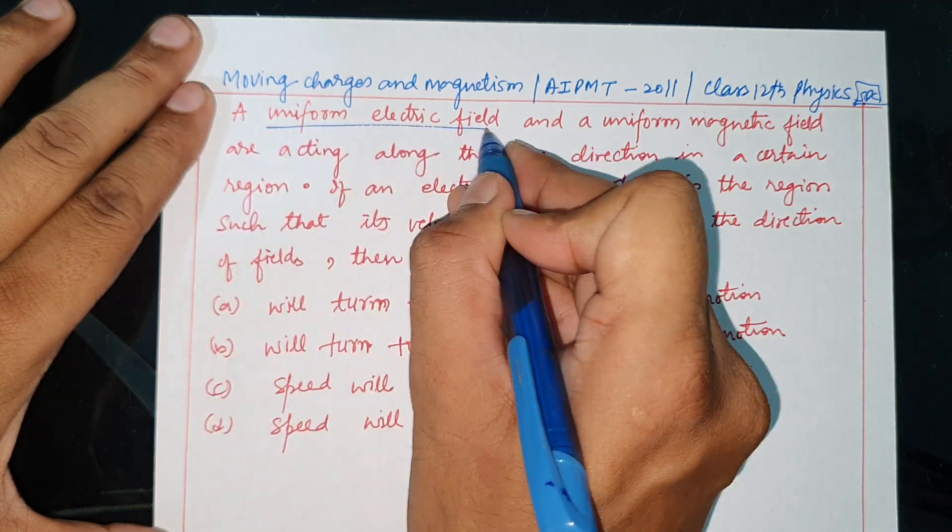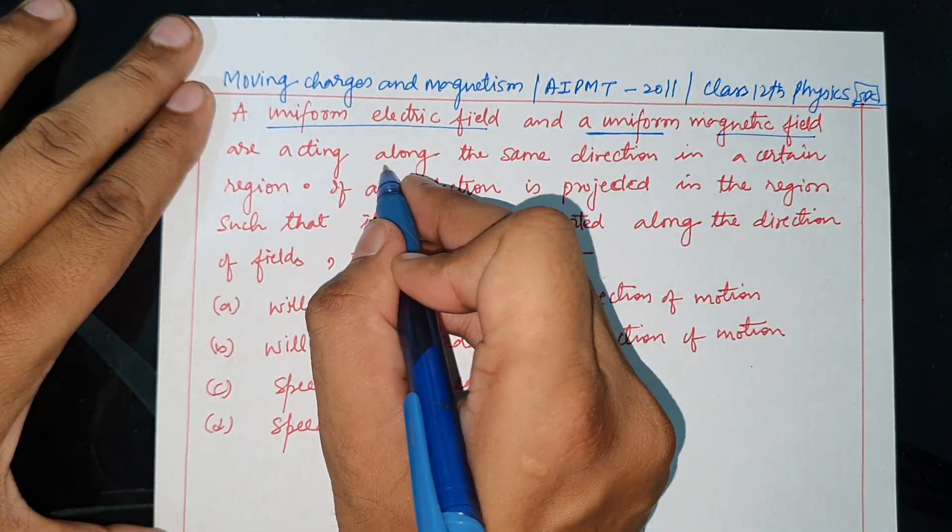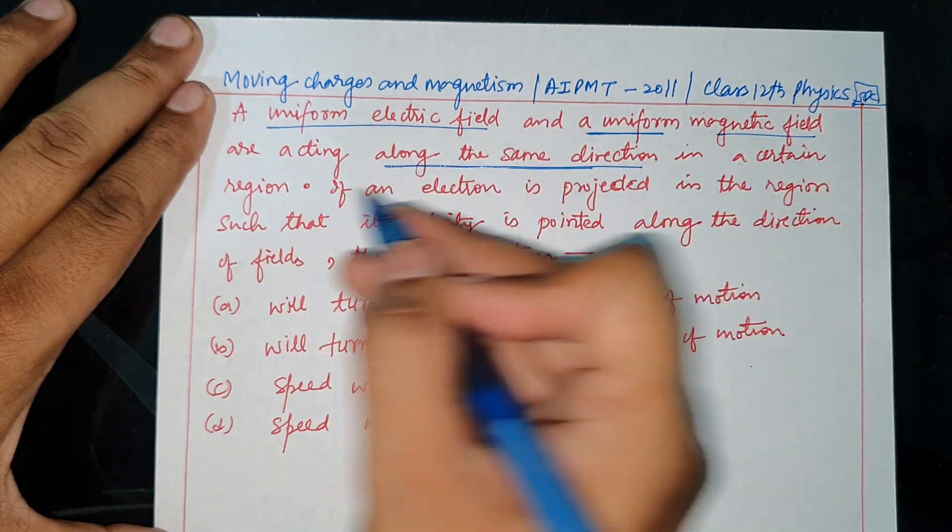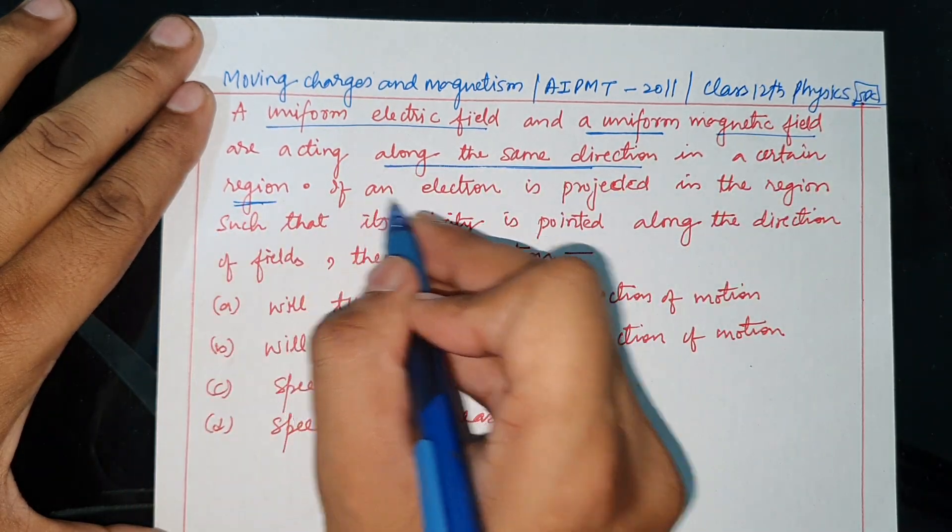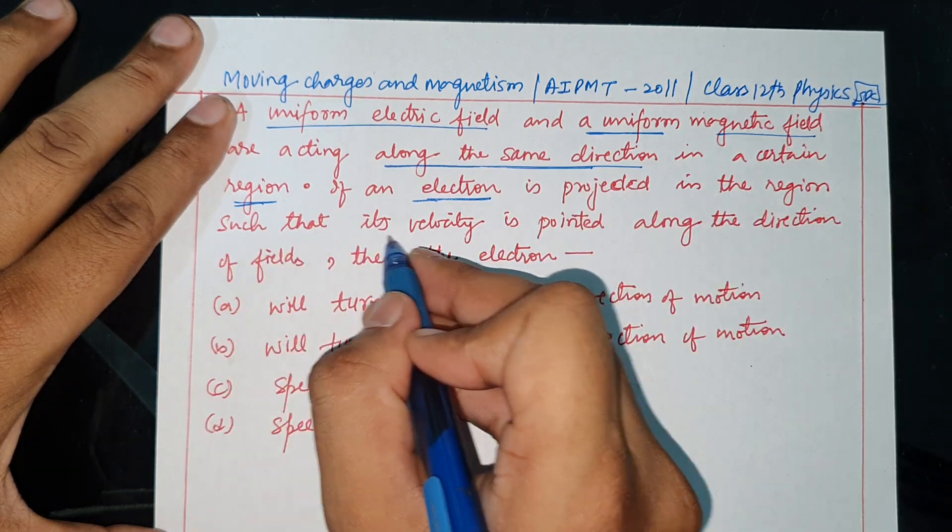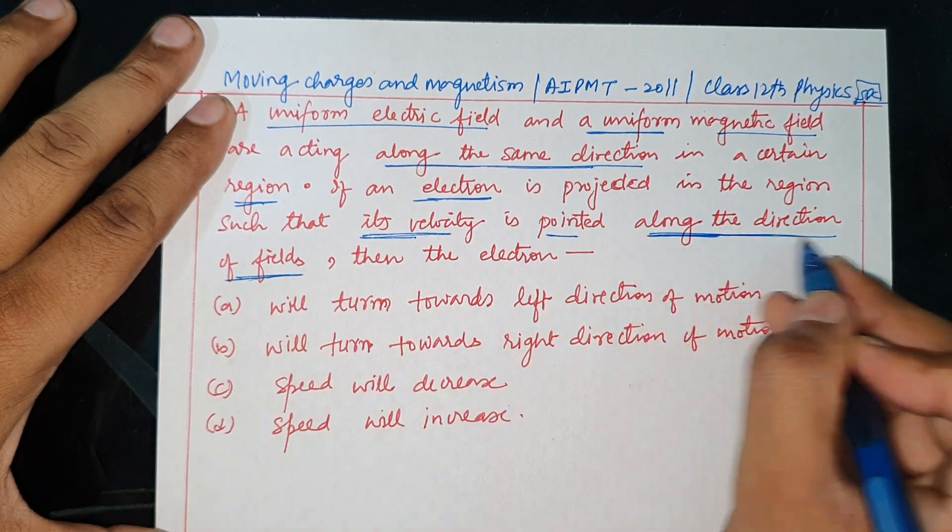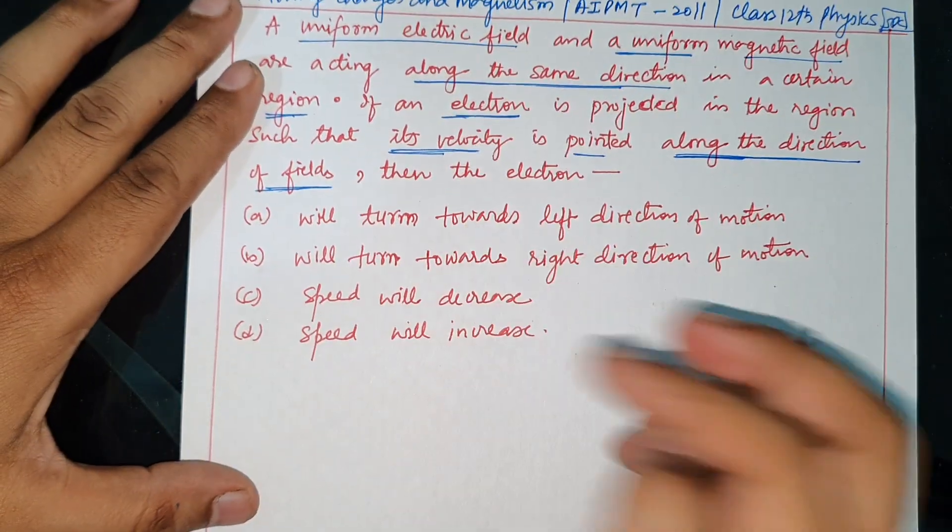A uniform electric field and uniform magnetic field are acting along the same direction in a certain region. If an electron is projected in the region such that its velocity is pointed along the direction of fields, then the electron...